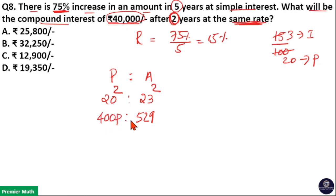I will write it as 400 parts and 529 parts. If you take the difference between principal and amount, which is 529 minus 400, that equals 129 parts.